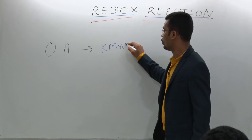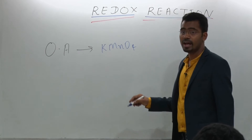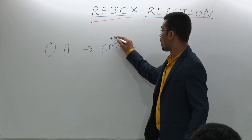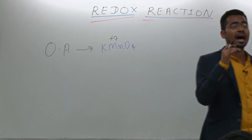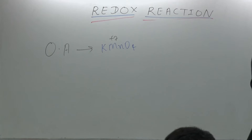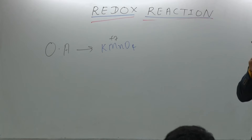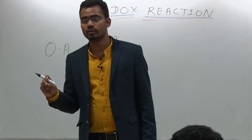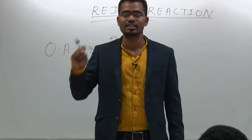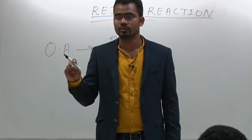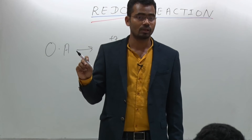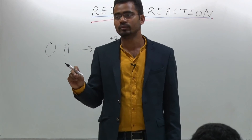For example, KMnO₄. Why? Because it has the highest oxidation state. Any compound which exists in the highest oxidation state will always act as an oxidizing agent. Any compound in which the central atom has the highest oxidation state — that is, the maximum number of valence electrons — always acts as an oxidizing agent.